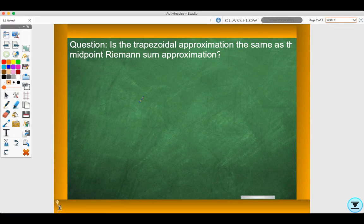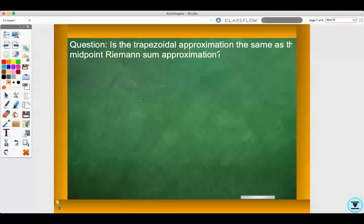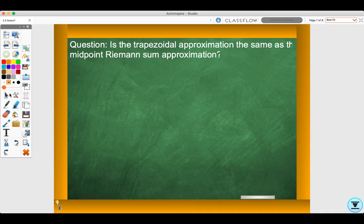So the question is: is the trapezoidal approximation the same as the midpoint Riemann sum approximation? And no, because the midpoint is still using rectangles. It could be close, but the answer would be no. It is not the same.